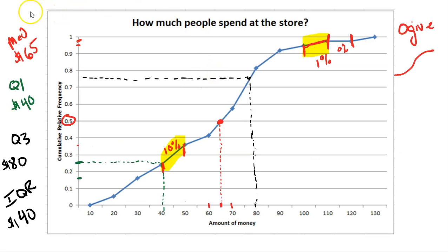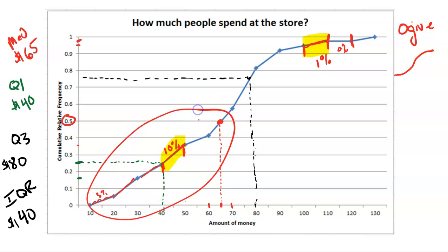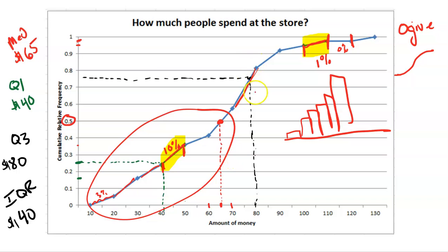We can actually get a sense of the shape as well. In the beginning we see small change — maybe 3% of data there. Then we start to see some bigger changes, some bigger chunks. There's a real big chunk somewhere in the middle, and then over here we start to see less and less chunks of data. So if I were to make a histogram, we'd see a small bit in the beginning, some medium bins, a big bin somewhere between 70 and 90, and then as we get to higher values, smaller and smaller amounts — possibly a little bit skewed right, or a little bit symmetric.